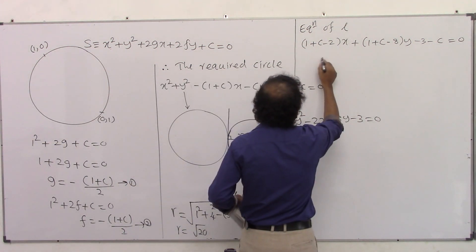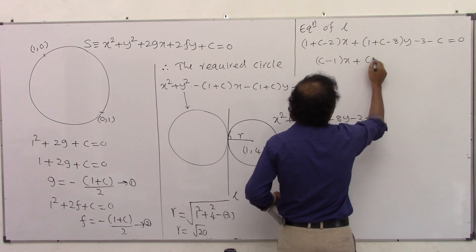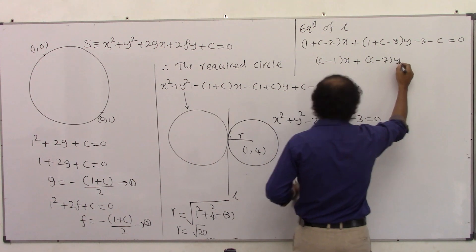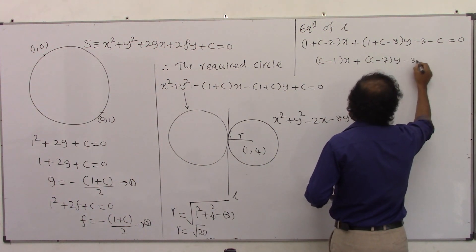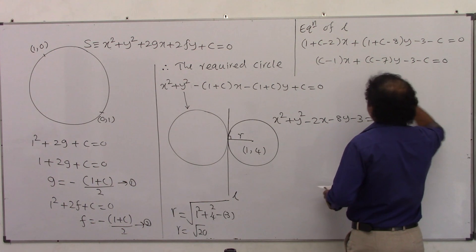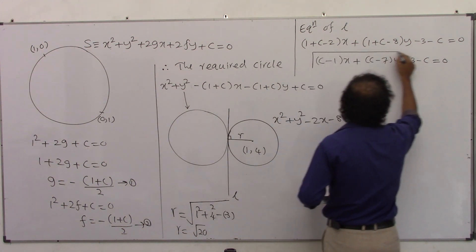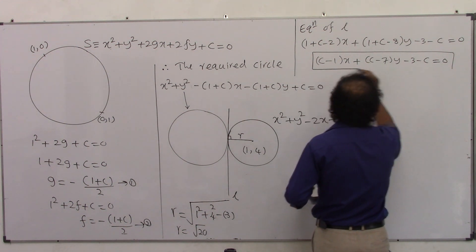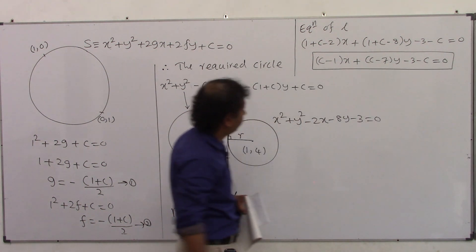Simplifying, we get the equation of L as: (c-1)x + (c-7)y - (3+c) = 0. This is a straight line in x and y.